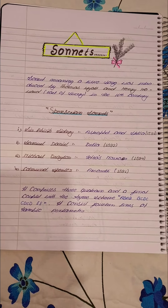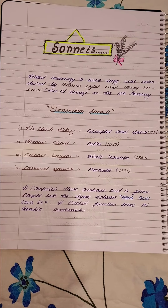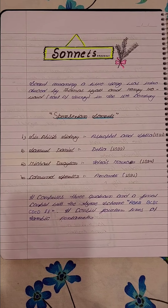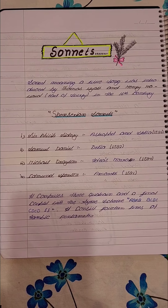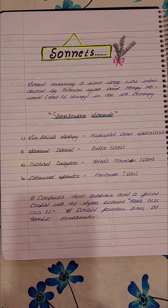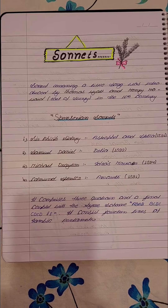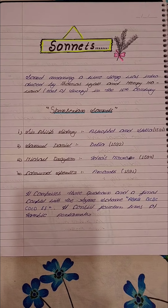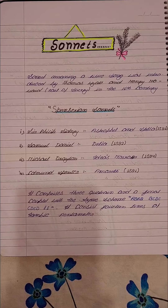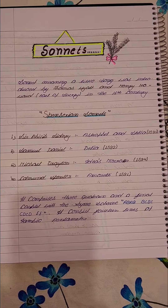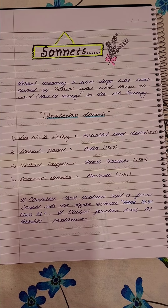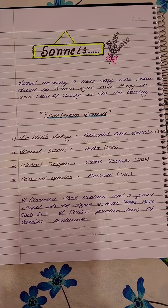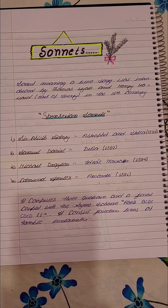Basically, a sonnet is a small lyric of 14 lines. If we talk about the origination of sonnets, it was originally written in Italy in the 14th century by the poet Petrarch. Petrarch first wrote it in Italy, and that is why he is known as the father of sonnets.